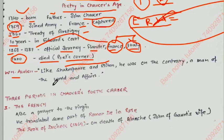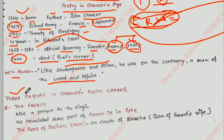Now let's discuss the three periods in Chaucer's poetic career. The first period was the French Period. In the French period, he wrote a prayer to the Virgin, he translated some parts of the Roman de la Rose, and he wrote the Book of the Duchess.